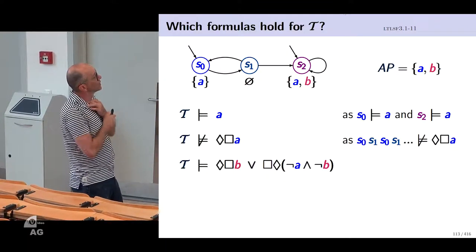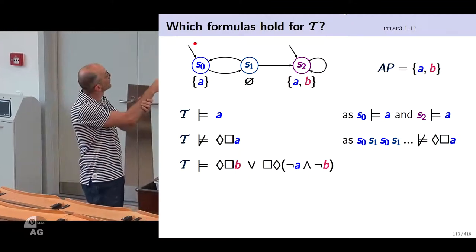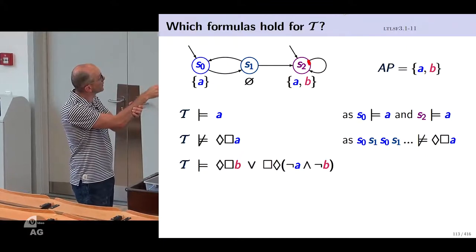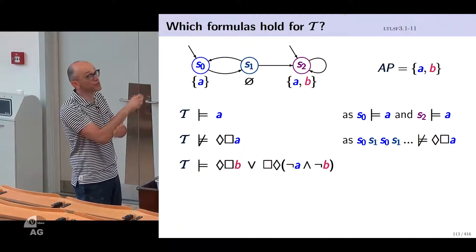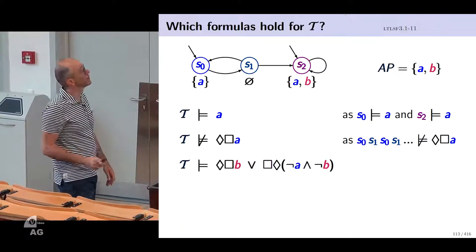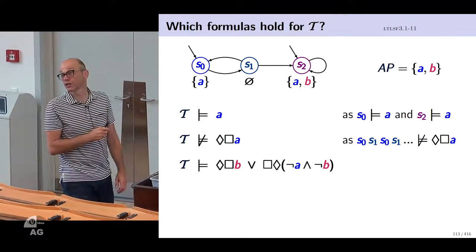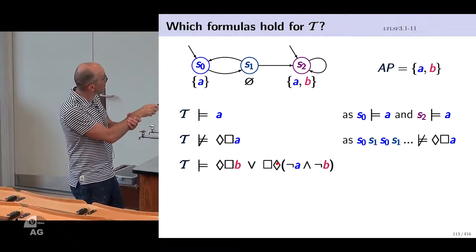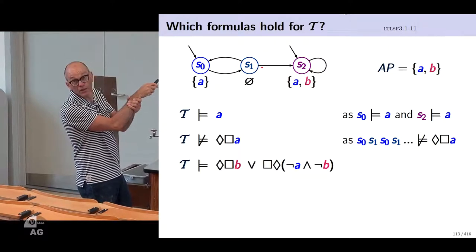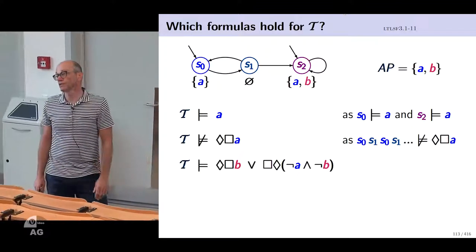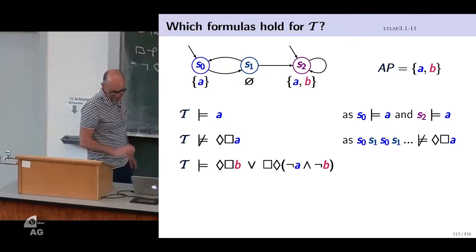Consider 'eventually always b OR infinitely often (not a and not b).' Any path reaching s2 eventually satisfies the first disjunct since from s2 always b holds. For the path cycling between s0 and s1 indefinitely: it does not satisfy the first disjunct, but s1 is labeled with the empty set — neither a nor b — visited infinitely often, so it satisfies the second disjunct.